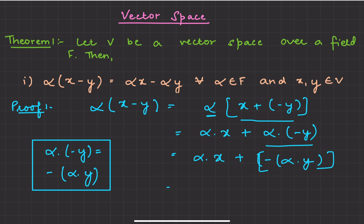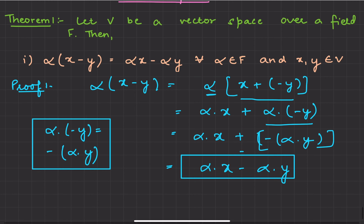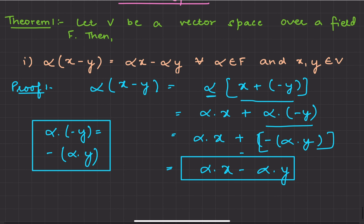So I can write this as alpha·x plus (minus alpha·y), and similarly, since we have plus minus here, I can write this simply as alpha·x minus alpha·y. And this is what we were supposed to prove — therefore, alpha(x minus y) equals alpha·x minus alpha·y.